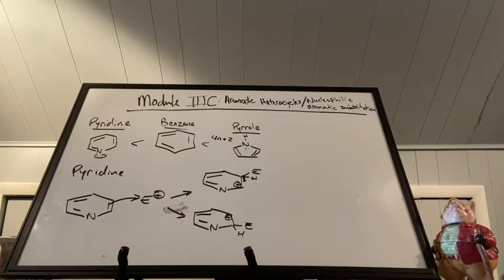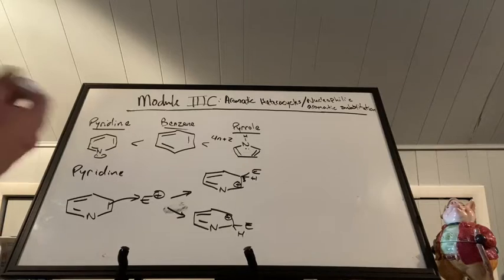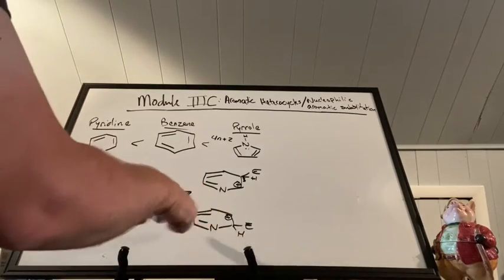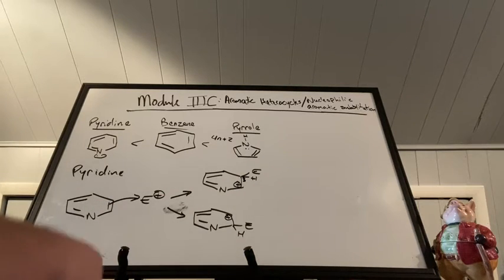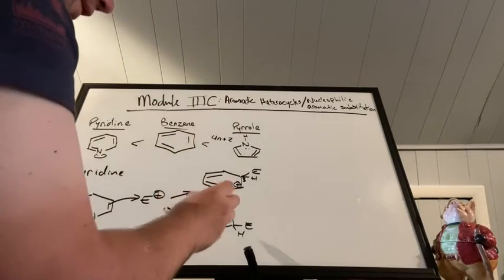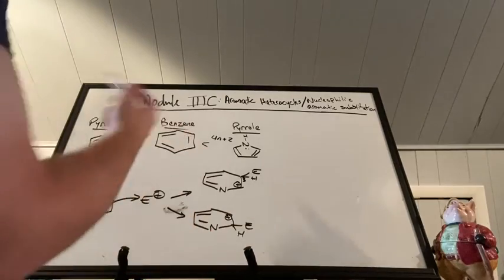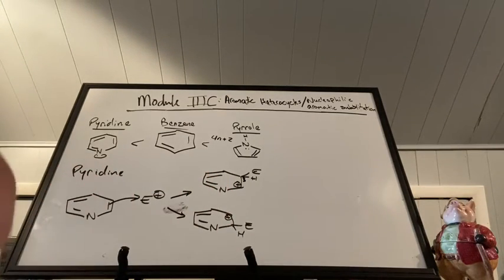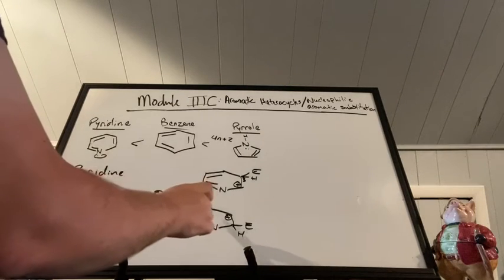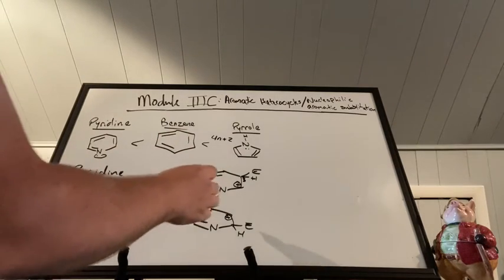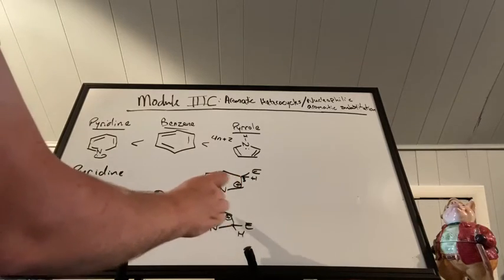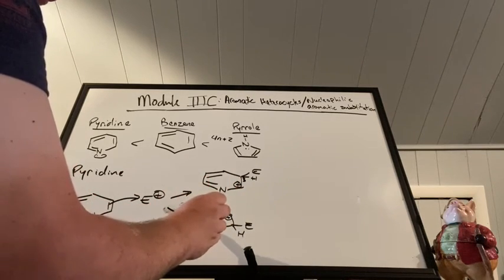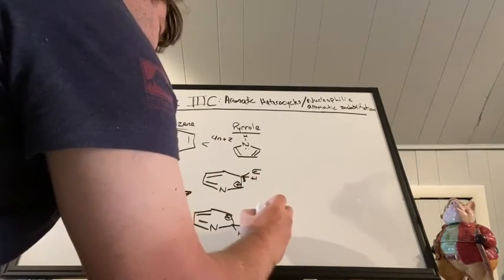Before proceeding with the aromatic substitution mechanism, let's go over the different types of sigma complexes that could form - where the positive charge migrates around the arenium ion. Just like with benzene's sigma complex intermediate, the sp3 carbon is the dead end where the charge can migrate. With each pi electron flip, you go to the adjacent position where that charge migrates - it flips over here and then down here.